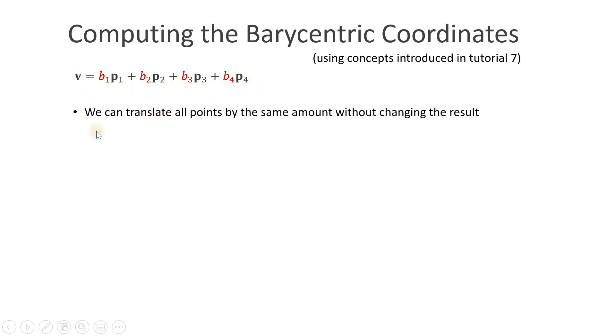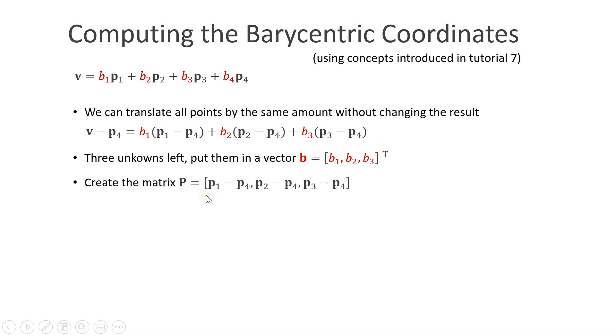First we observe that we can move all the points v, p1, p2, p3 and p4 by the same amount without changing the result. So here I subtract p4 from all these points. The result is that the last term drops out because we have p4 minus p4, which is 0. This means that we are left with only three unknowns. We can put these three scalar values into one three-dimensional vector b. We can also define a matrix P with the columns p1 minus p4, p2 minus p4 and p3 minus p4. Now we can write this equation here in a more compact way. It's now also possible to solve for the vector b. What we have to do is invert the matrix P and multiply it by v minus p4.